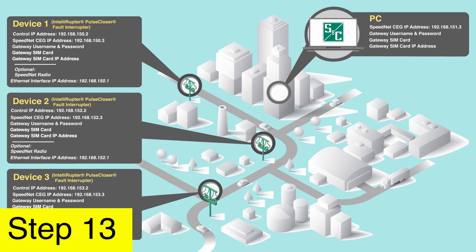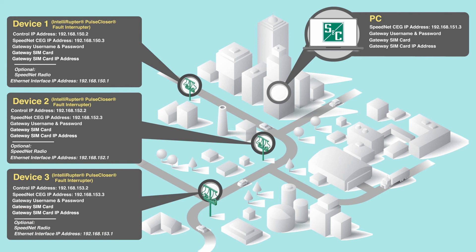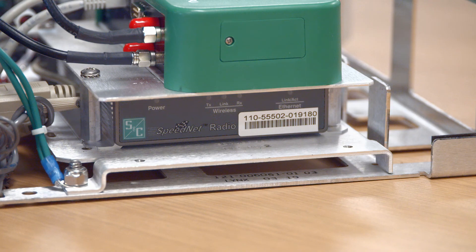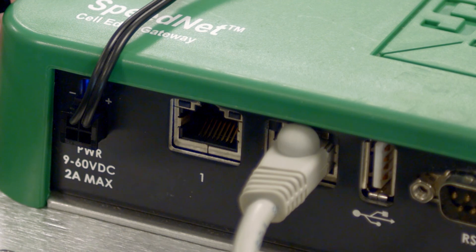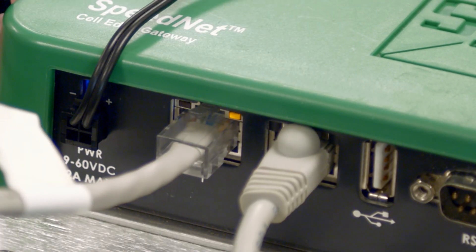Step 13: Skip to Step 14 unless the gateway is being used in a system where the cellular network is used in conjunction with a Speednet radio network. Otherwise, configure the Speednet radio. For more details, see S&C's documentation for the Speednet radio. After completing configuration of the Speednet radio, confirm that an Ethernet cable connects the radio to Ethernet port 1 of the gateway.